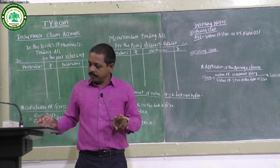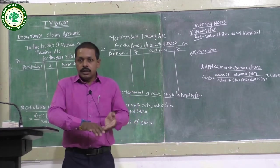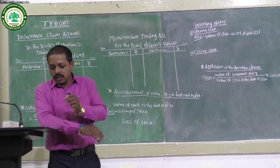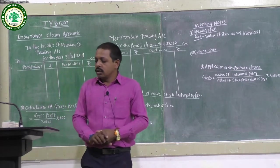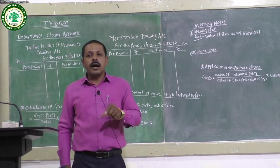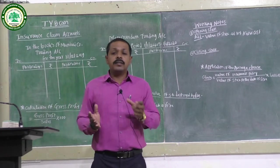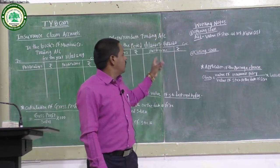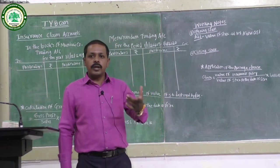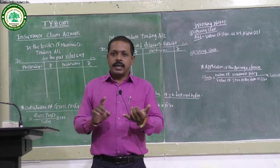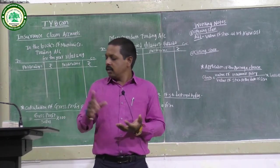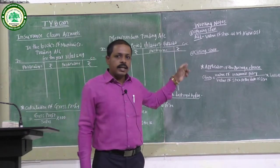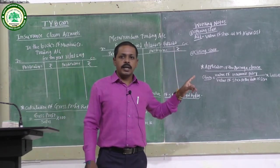For the stock adjustment: it was the practice of the company to value stock at 10 percent above cost. This means an addition or increase of 10% on cost is included in the stock value. So the stock is recorded at cost plus 10%, meaning we need to convert it back to cost by reversing that 10% increase.